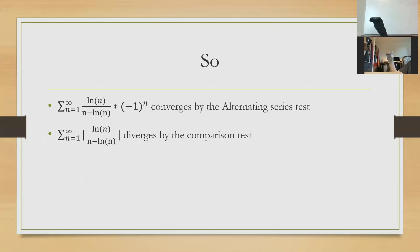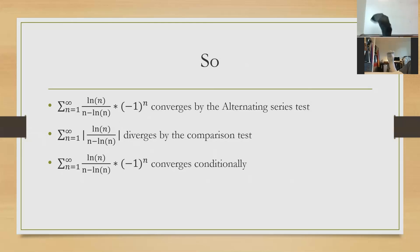It diverges by the comparison test. So it converges by the alternating series test and diverges absolutely — what do you call something that works sometimes but not other times? It's conditional — our series is conditionally convergent! Thank you for coming to Jimbo's Math Corner; I hope you gained something from this. Have a great day!